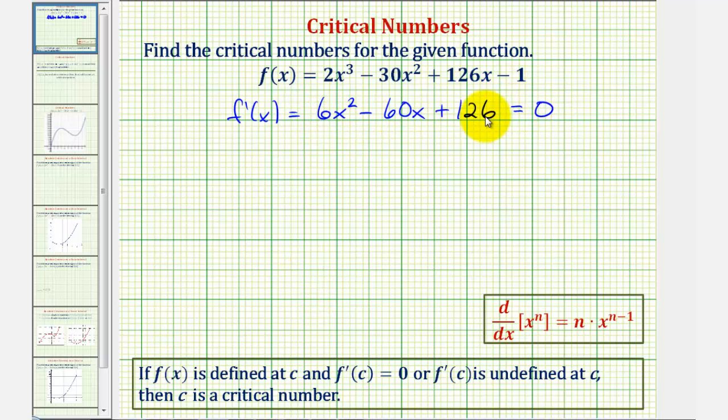So notice how six is a common factor here. If we factor out six, we'd be left with x² - 10x, and 21 times six equals 126, so we'd have plus 21 equals zero.